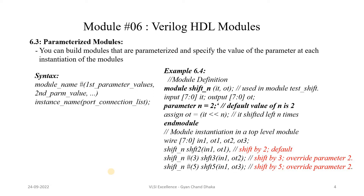Now let's see parameterized modules. Parameterized modules make it possible to use a single module for different configurations. For example, here is a shift module with an input signal, an output signal, and a parameter N with a default value of 2. The module shifts the input signal by N and assigns the shifted value to the output. So with N equal to 2, the input will be shifted by 2 and assigned to the output.